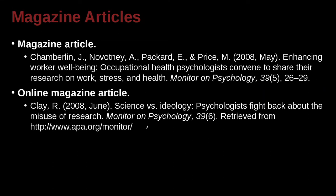Here's an online magazine that you don't get in print. We have the author's name and first name initial. We have the year and the month, because it's a monthly magazine. Here is the name of the article — 'Science versus Ideology' — then a colon and a capital after that: 'Psychologists Fight Back about the Misuse of Research.' Here is the magazine's name, italicized, comma, and then 39 is italicized. Six is not italicized, period.